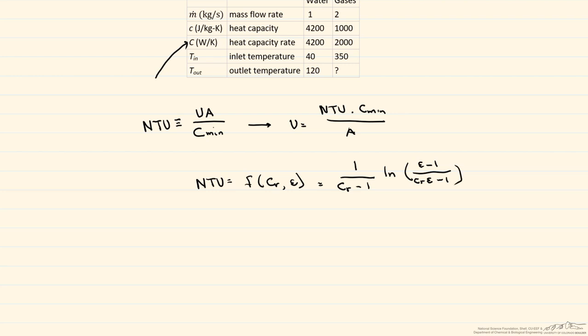So our C_R is equal to our C_min divided by C_max, and we can readily see that C_min is equal to that of the gas, and C_max is equal to that of the water. So our C_R, our ratio, is just going to be 2000 divided by 4200, which is equal to 0.48.